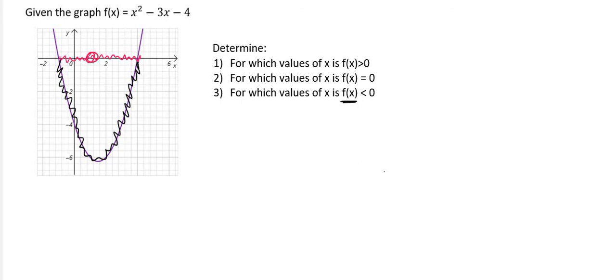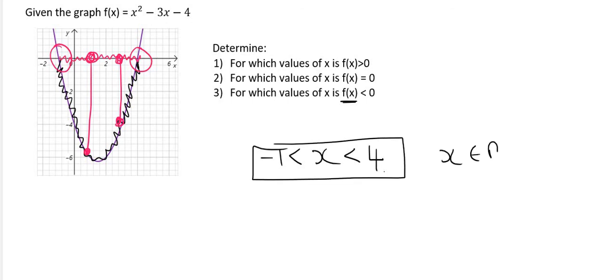For example, this x value here goes with that y value. This x value here goes with that y value. So it's all the x values between this point and this point. So we can say that x must be all the numbers that are bigger than minus 1, but at the same time, they must be smaller than 4.